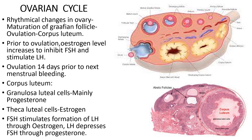Small cavities develop within the follicle and unite to form a large cavity called the antrum folliculi, which is filled with liquor folliculi — this is the secondary follicle. Later it is converted to a mature Graafian follicle. Just before ovulation the primary oocyte completes its first meiotic division, giving rise to the secondary oocyte and the first polar body.